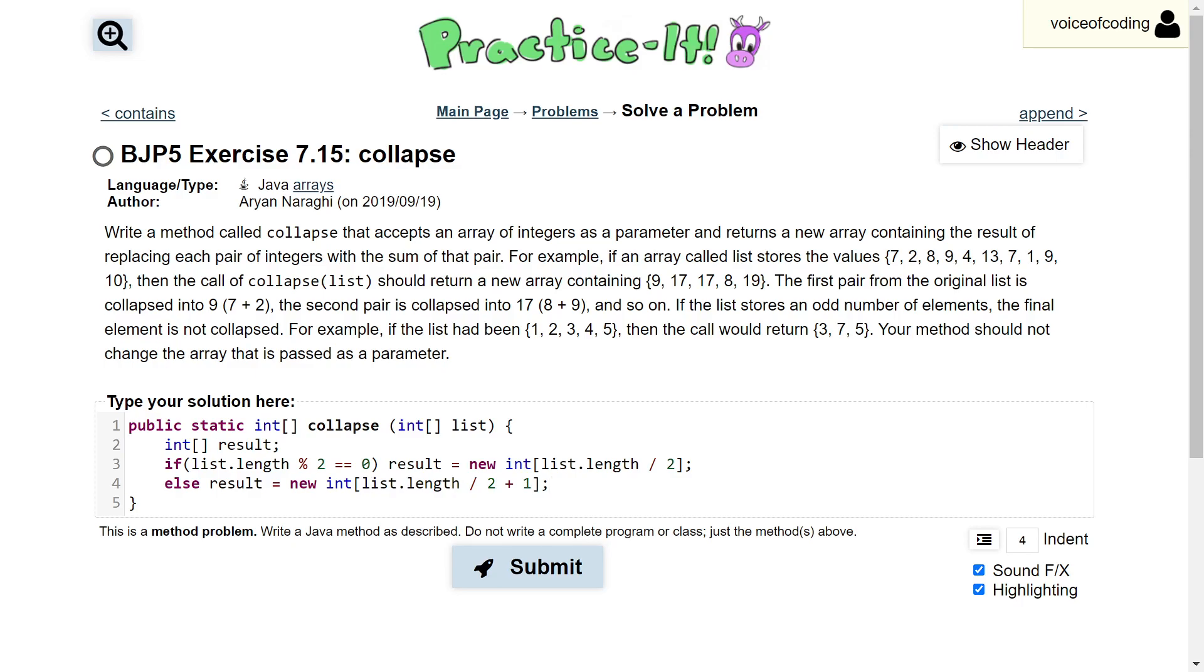For instance, if we have a list that is 5 elements long, which is an odd number, 5 divided by 2 is going to give us 2. Because 5 divided by 2 in actuality gives us 2.5, but that's going to be rounded down,